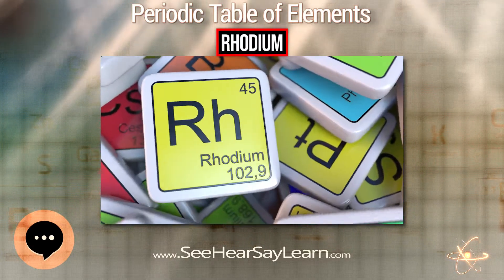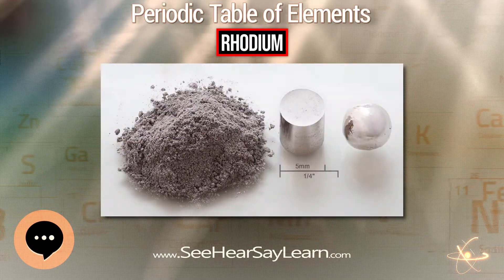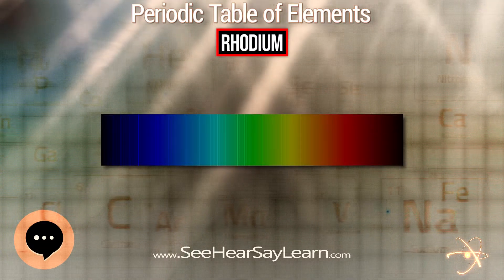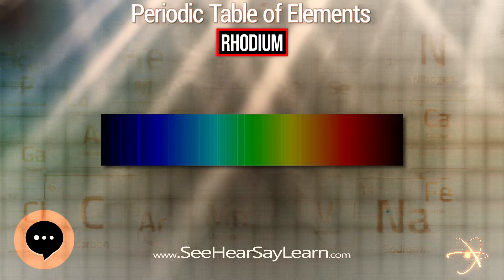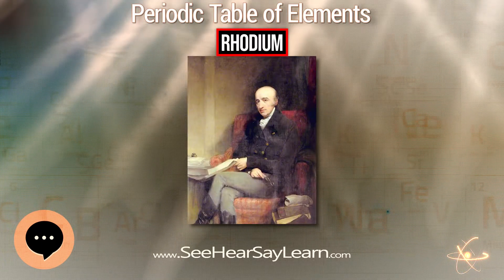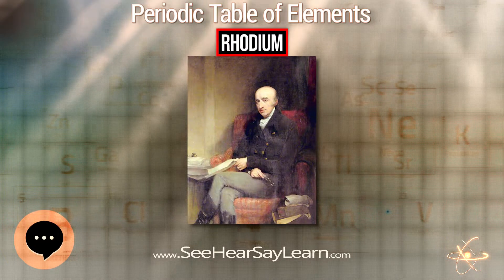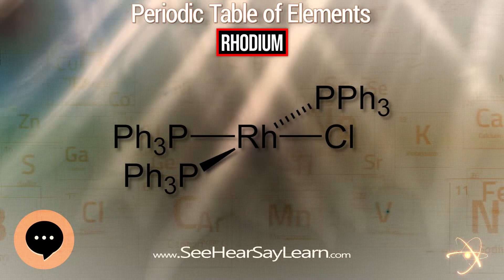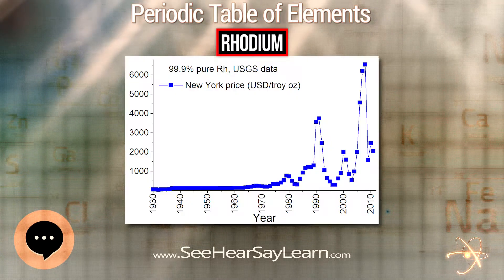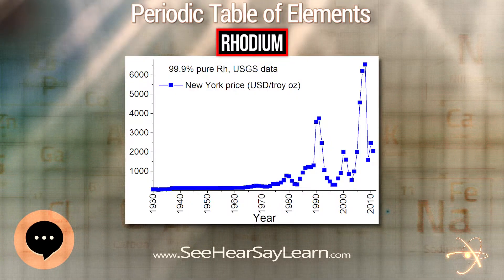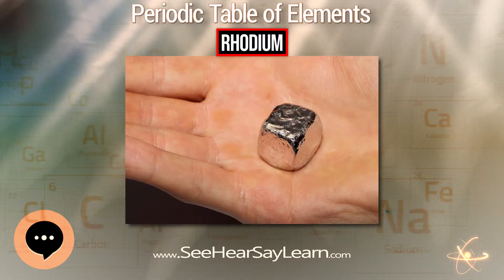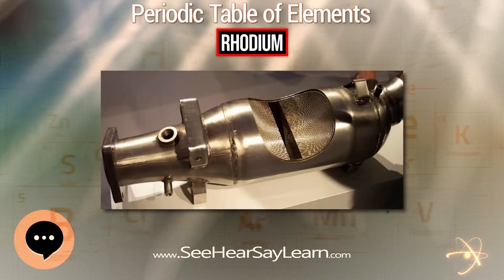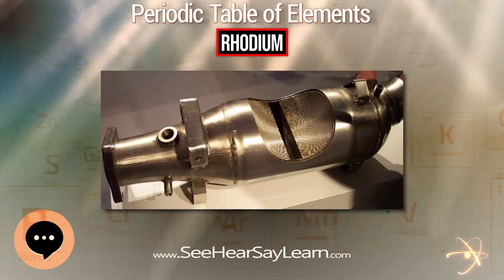The primary use of this element is in automobiles as a catalytic converter, changing harmful unburned hydrocarbons, carbon monoxide, and nitrogen oxide exhaust emissions into less noxious gases. Of 30,000 kg of rhodium consumed worldwide in 2012, 81% went into this application and 8,060 kg was recovered from old converters. About 964 kg of rhodium was used in the glass industry, mostly for production of fiberglass and flat panel glass, and 2,520 kg was used in the chemical industry.